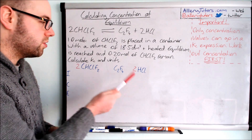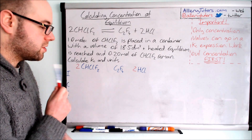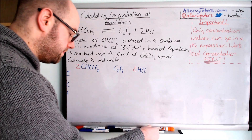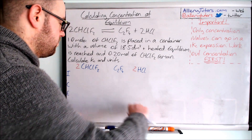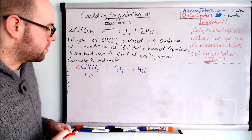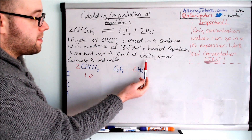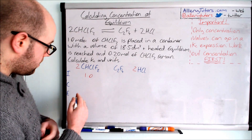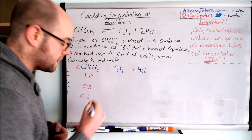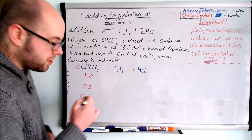We write down the initial number of moles for each species. For CHClF₂, we're told the initial number of moles is 1.0 — that's what's placed in the container at the start. At equilibrium, 0.2 moles of CHClF₂ remain, so it has decreased by 0.8 moles. That change of 0.8 represents how much CHClF₂ has been used up.